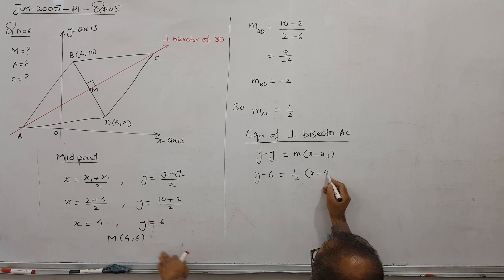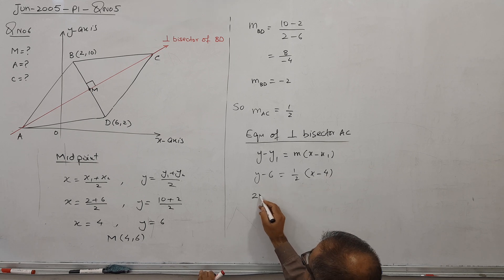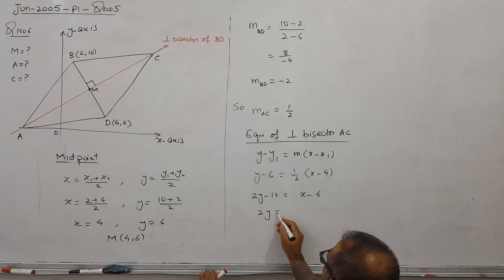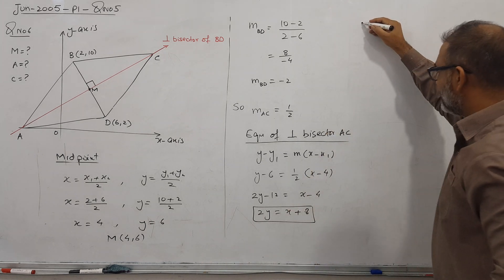And this half comes here. And X minus 4. This 2 goes there. 2Y, 12, and X minus 4. So 2Y equal to X. And it comes here. And plus 8. And this is my equation of perpendicular bisector.